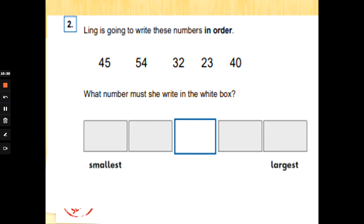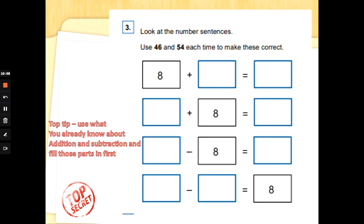Number two. Ling is going to write these numbers in order: forty-five, fifty-four, thirty-two, twenty-three, forty. What number must she write in the white box? We've got to pay attention here. We've got to go from the smallest to the largest number. Now what I would do first is write the numbers in the right order myself. Twenty-three, thirty-two, forty, forty-five, and fifty-four. But you can always rub the other numbers out or think it through and not write them down. You would still get the point if you'd put all of the numbers in the boxes. Fantastic. Well done.